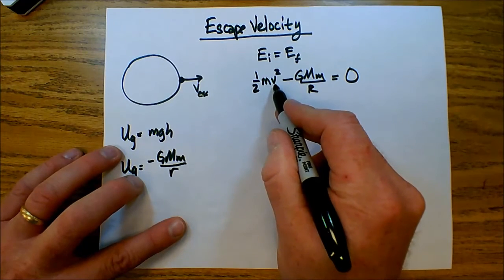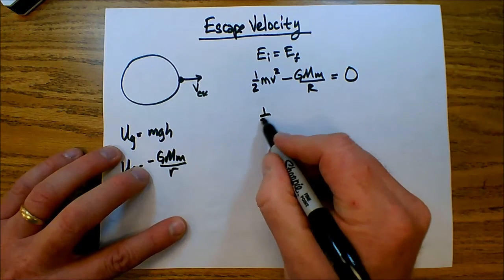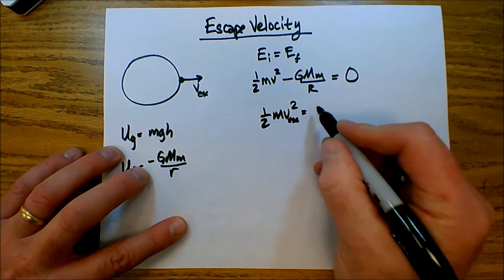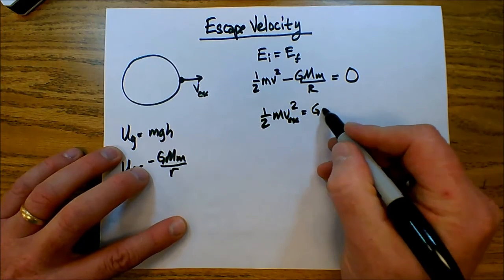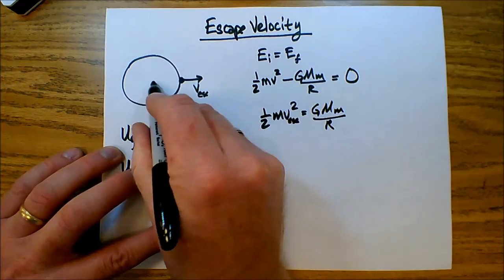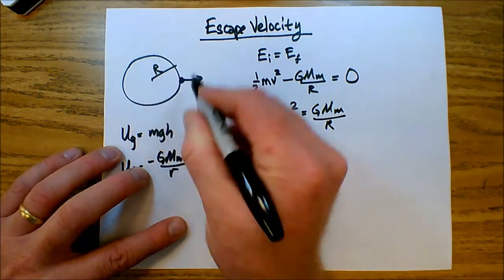So now, I simply solve this for v, the escape velocity. So one half m v escape squared equals, let's add this over, G mass of the planet, mass of the object over r. r is the radius of the planet, the distance here at which it was originally located.